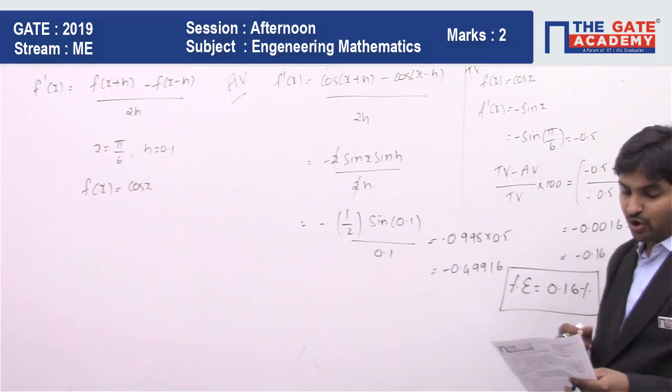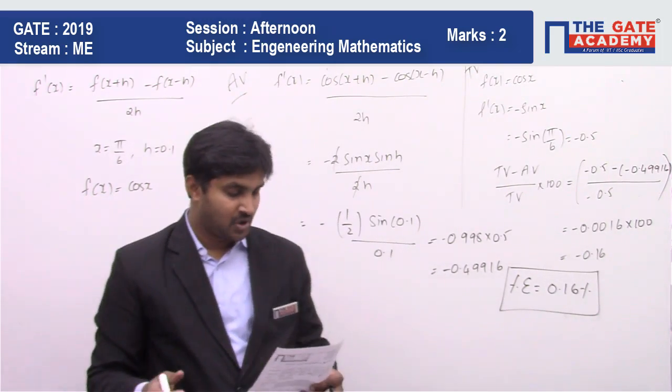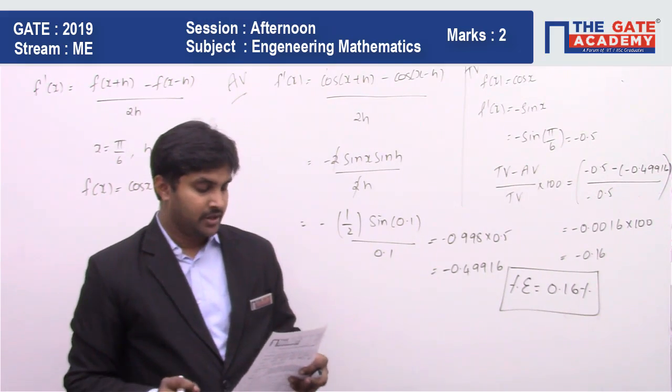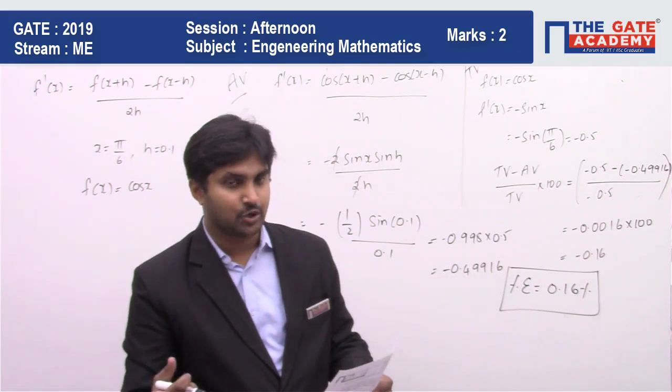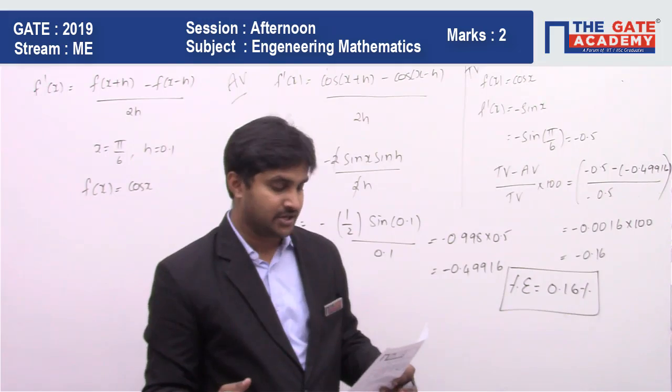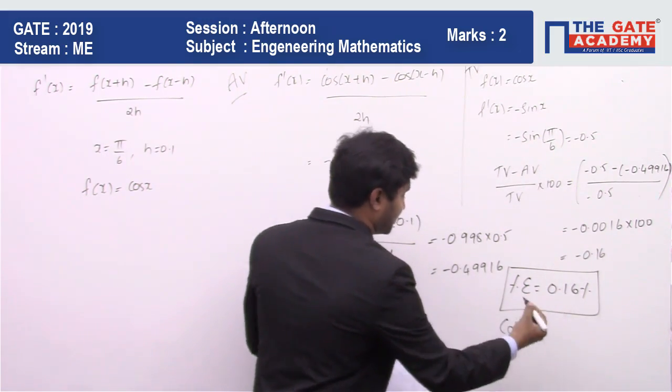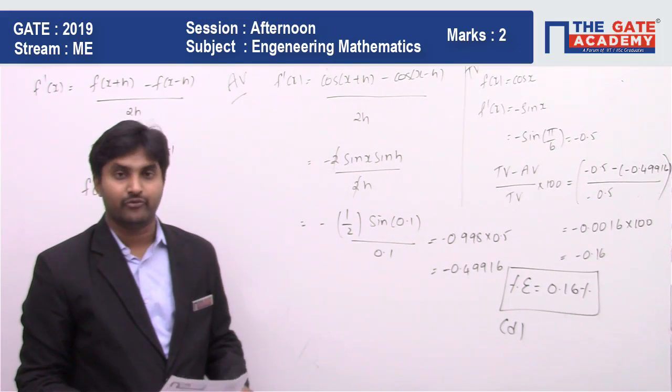Now if you compare with the options which are given: option A says less than 0.1%, this value is greater than 0.1% so option A is wrong. Option B says that it is greater than 1%, which is also wrong. Option C says that it is greater than 5%, which is again wrong. So option D says that it is greater than 0.1%, which is correct, and of course it is going to be less than 1%. So according to the answer that we got, we will go with option D, which is greater than 0.1% and less than 1%.